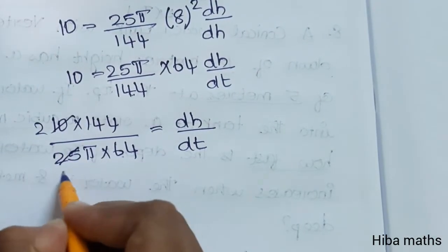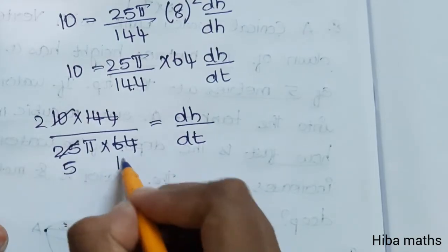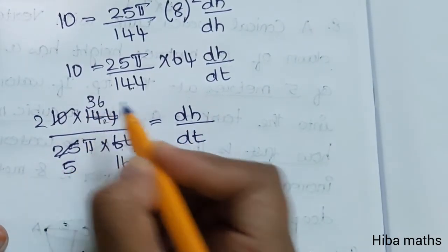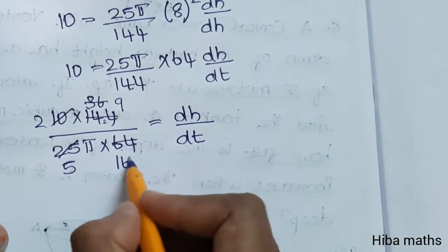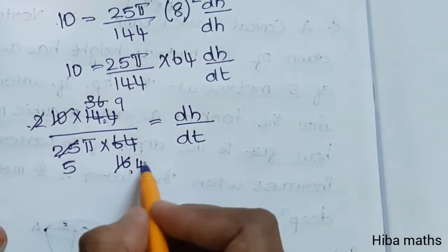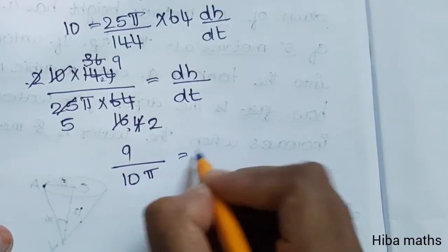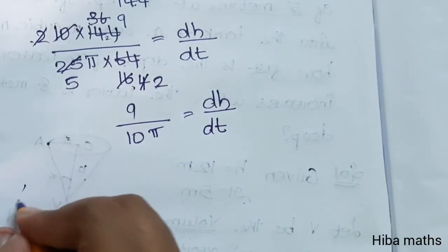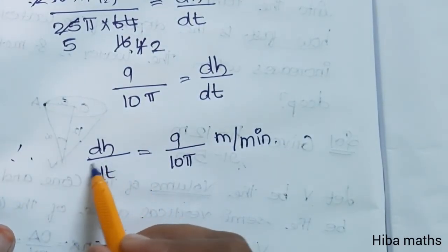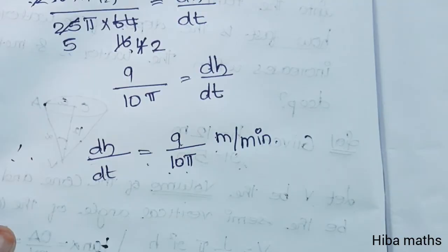Solving the arithmetic: 10 × 144 divided by 25π × 64. Simplifying — 144 and 64 reduce, giving 9 over 40. So the balance is 9/(10π). Therefore, dH/dT = 9/(10π) meters per minute. If you have any doubts, comment in the comment section, subscribe to our channel. Thank you so much for watching.